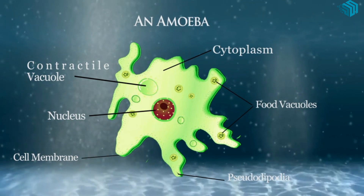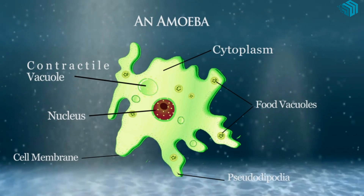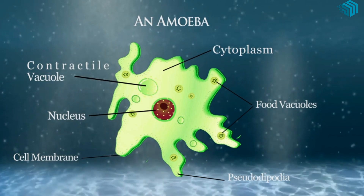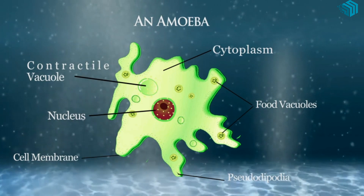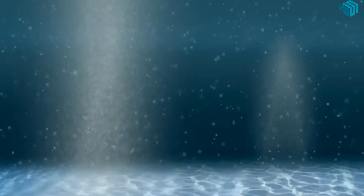These two amoebae will in turn reproduce four amoebae, and the process keeps repeating on and on.